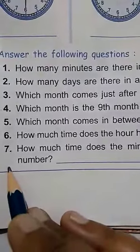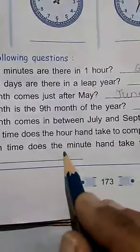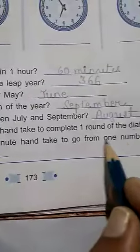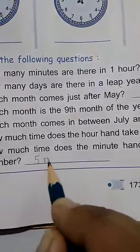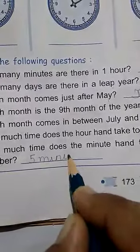Next, seventh question, how much time does the minute hand take to go from one number to the next number? So the time taken by the minute hand is 5 minutes. You will write here 5 minutes.